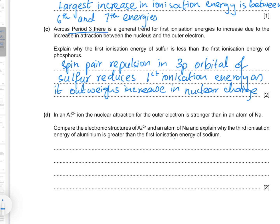You need to mention that the spin-pair repulsion in sulfur outweighs the increase in nuclear charge. Even though going from phosphorus to sulfur there is an increase in nuclear charge — meaning you'd assume greater energy is required to remove an electron — the repulsion between electrons in the 3p orbitals outweighs this increase in nuclear charge.